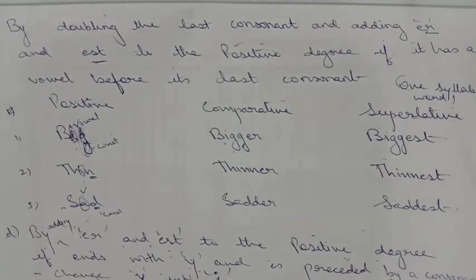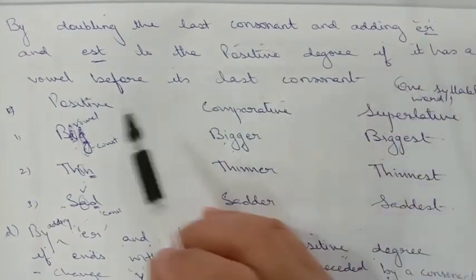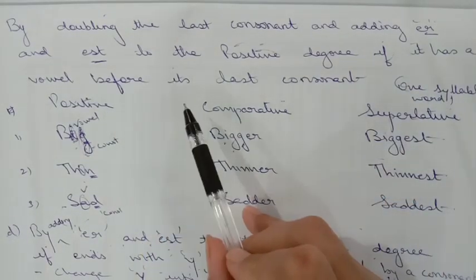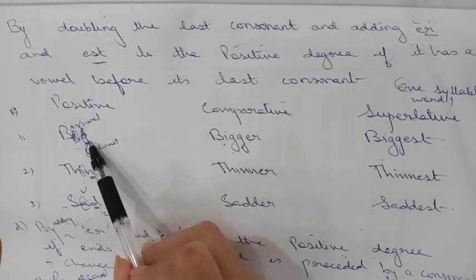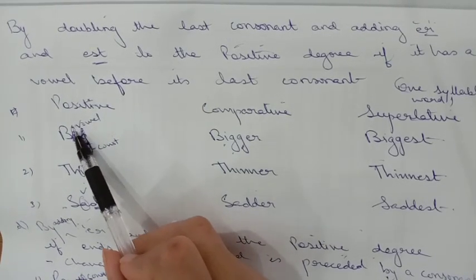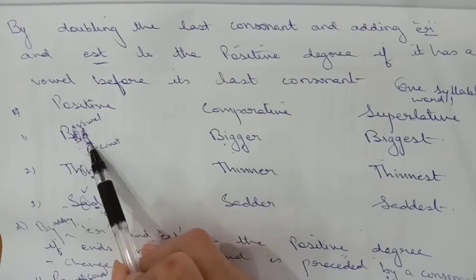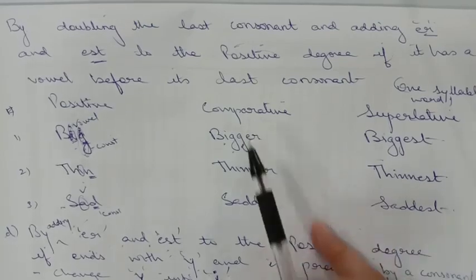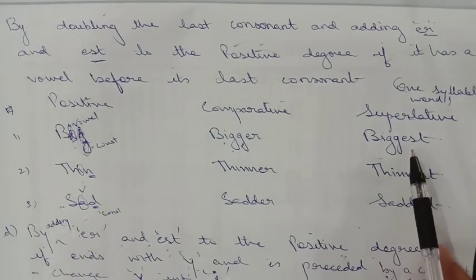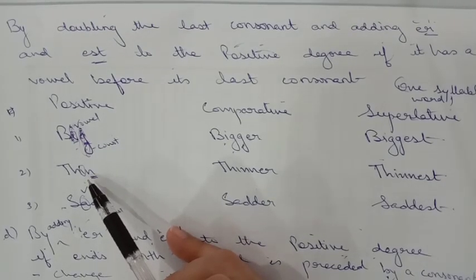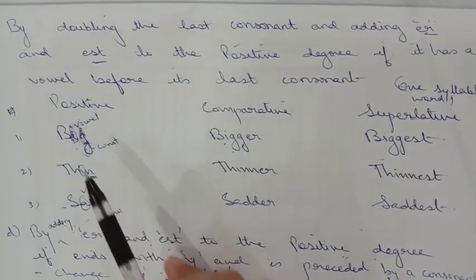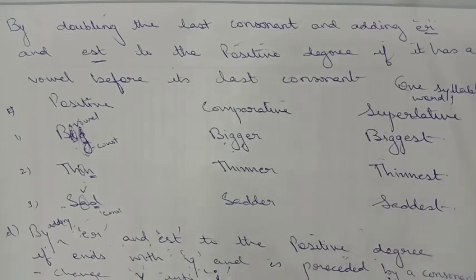Rule three: by doubling the last consonant and adding E-R and E-S-T to the positive degree, if the word has a vowel before its last consonant. Also, this applies to one-syllable words — the number of times your chin moves when you pronounce the word indicates the syllables. So 'big' becomes 'bigger' and 'biggest'; 'thin' becomes 'thinner' and 'thinnest'; 'sad' becomes 'sadder' and 'saddest'.